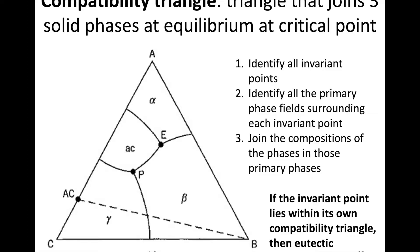The next thing we're going to do is start with one of those invariant points at a time and identify all the primary phase fields that surround it. Looking at E, the primary phase fields that surround it are alpha, AC, and beta — those are our three primary phase fields.